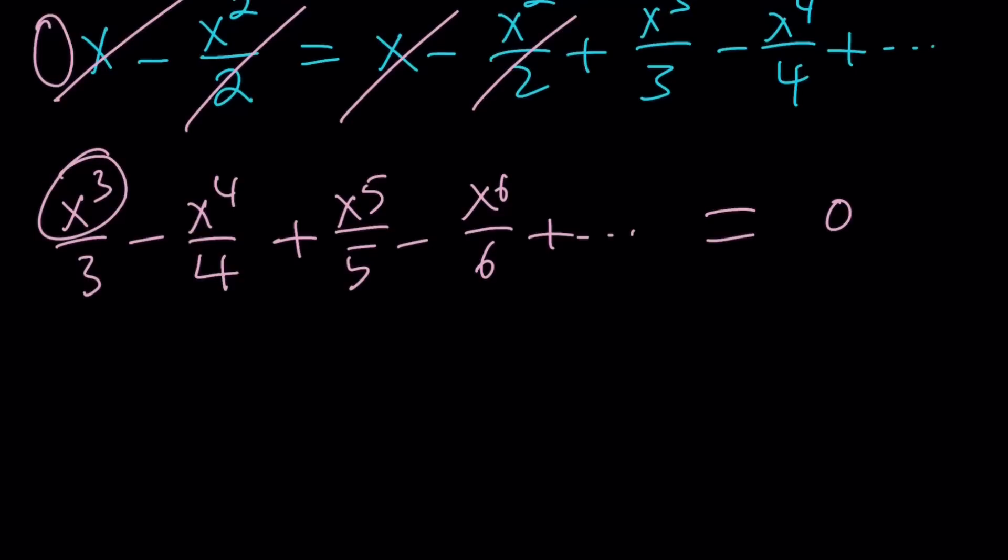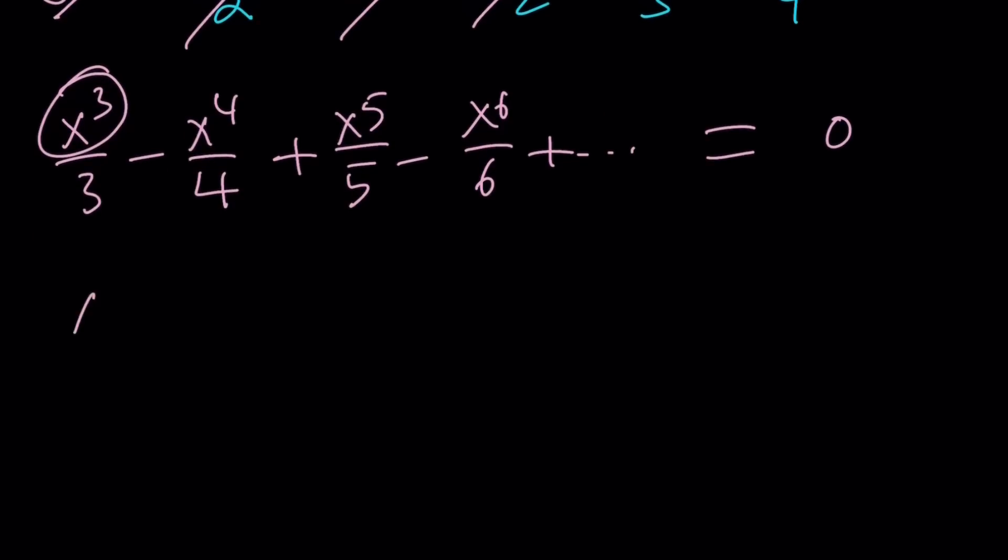So here's what I can do. x³ is the greatest common factor. So I can take out x³, and I'm going to end up with 1/3 minus x/4 plus x²/5 minus x³/6. We took x³ out, so that should be x³. Over 6, so on and so forth. Right?